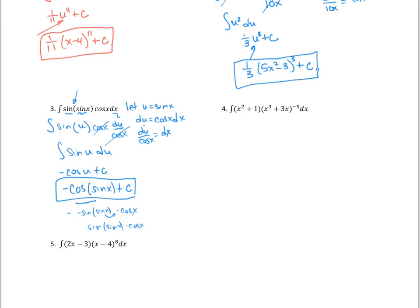Next problem. This one has two parts, and the dilemma is which to choose. We'll go with x cubed plus 3x because it has a higher power — it's to a negative five — so it's more complex. We let u equal x cubed plus 3x. Taking the derivative: du equals 3x squared plus 3 dx, so dx equals du over 3x squared plus 3.